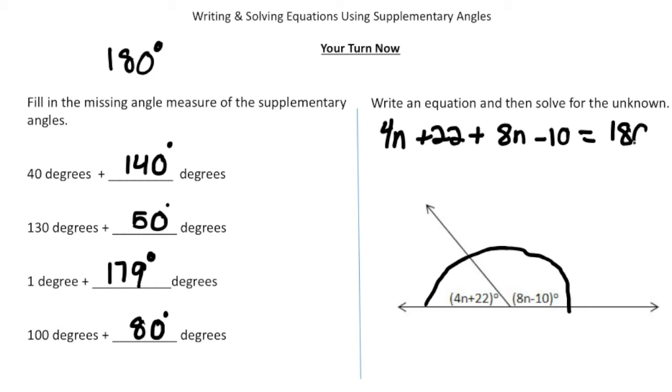So we're going to add 4n + 22 (that's the first angle) plus 8n - 10 is going to equal 180 degrees. Now we can simplify the left-hand side, so 4n and 8n gives you 12n, and then the constants 22 and negative 10 add up to 12.